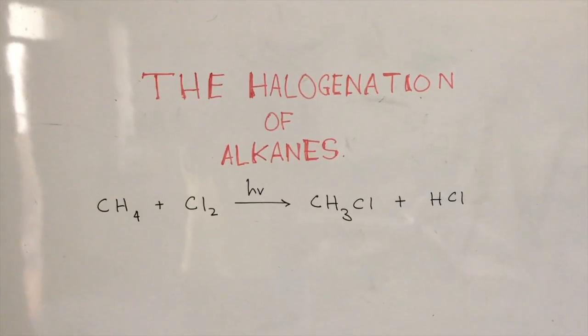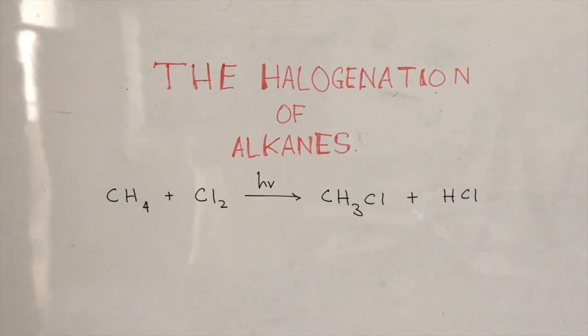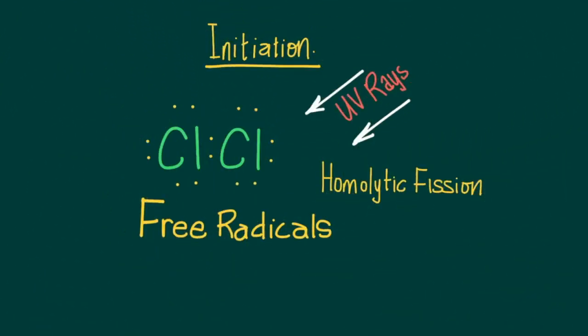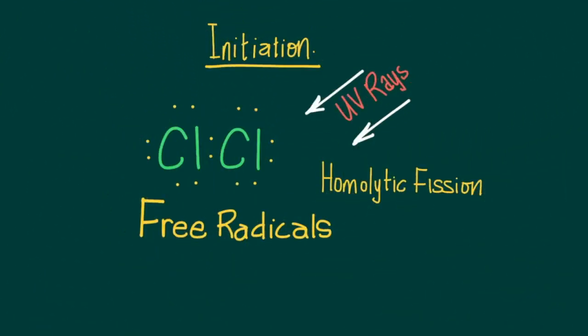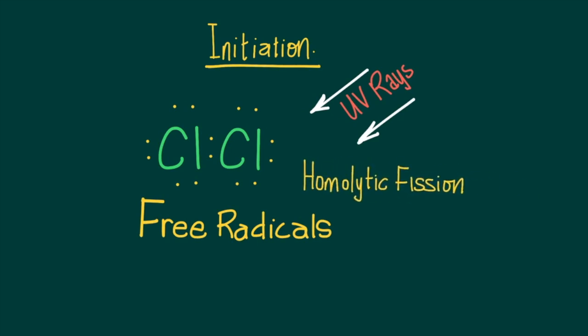Notice that the process involves the use of ultraviolet radiation, H nu. The halogenation process begins first with the use of ultraviolet radiation to carry out a homolytic fission. And this is how the reaction is initiated.